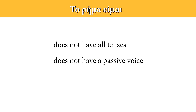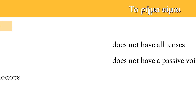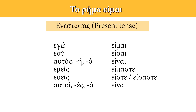The verb είμαι is an irregular verb. It does not follow the conjugation rules of all the other verbs. It also does not have all the tenses that other verbs may have, and it does not have the passive voice. Today we're going to see only the present tense.